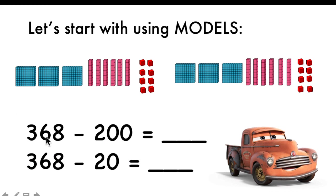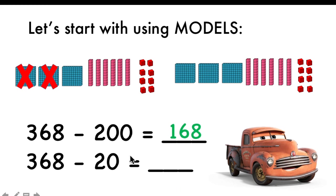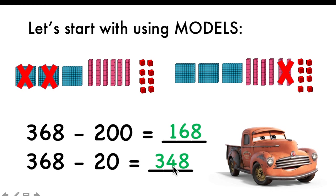Now let's take away tens. We will not touch the hundreds digit — the three hundreds will stay the same. We will work with tens. We will cross two of them away. How many will stay? Four. So, number six will change to four. Hundreds and ones stay the same. Only number six changes to four.